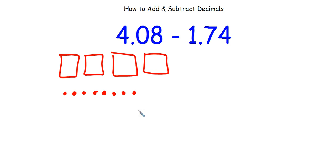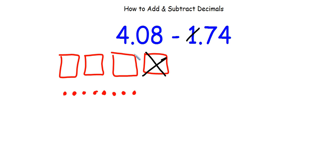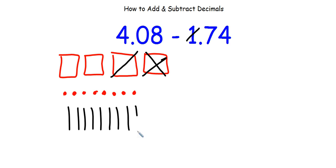I'm going to take away 1 and 74 hundredths by crossing off what I have here. I take away one whole — there it is, gone. Now I have to take away 7 tenths, but I notice I don't have any rods in my picture. However, each grid is made up of 10 rods, so I regroup: this grid becomes 10 rods: 1, 2, 3, 4, 5, 6, 7, 8, 9, 10.